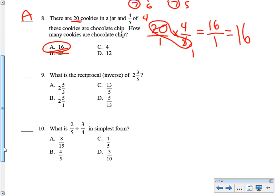Reciprocal inverse, otherwise known as the flip. Call it what you want. Turn this into an improper fraction. 5 times 2 is 10, plus 3 is 13. So this and that are the same thing. But if I flip this, 5 is on top. The answer is D.